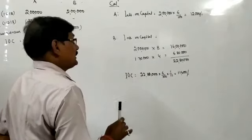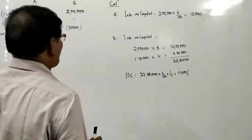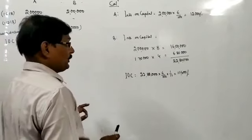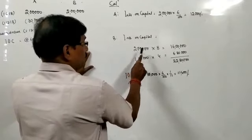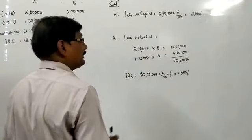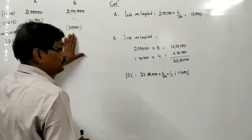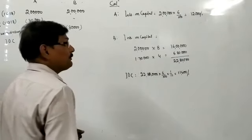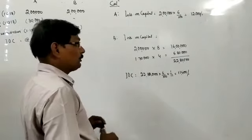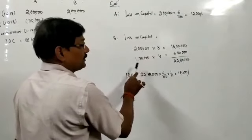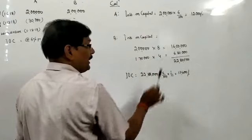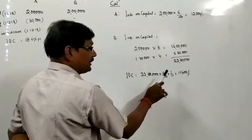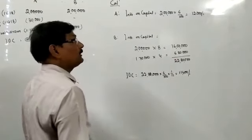For B, the initial capital was 2,00,000 rupees and it was with the business from 1st April to 1st December — that is 8 months. So 2,00,000 rupees for 8 months gives a product of 16,00,000. After withdrawing 30,000 rupees from capital, the remaining balance is 1,70,000, which was with the business from 1st December to 31st March — 4 months — giving a product of 6,80,000. The total product is 22,80,000, so interest on capital equals 22,80,000 × 6% ÷ 12 = 11,400 rupees.